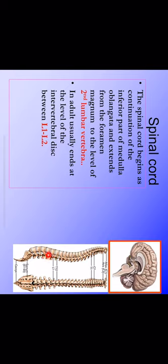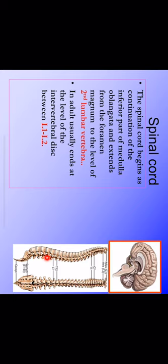In adults, the spinal cord terminates at the level of L1–L2, or more specifically at the intervertebral disc between L1 and L2. Below this level there is no spinal cord structure — only a collection of nerves and meninges.